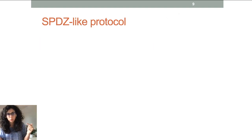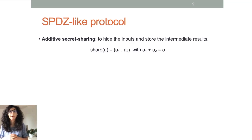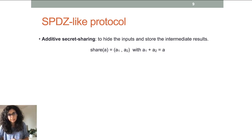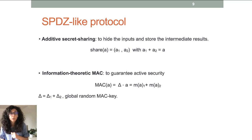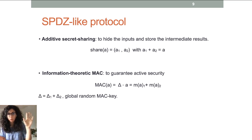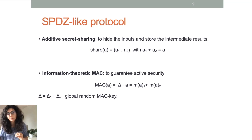I'll start by recalling how an SPDZ-like protocol looks. We have two tools. First, additive arithmetic secret sharing: any value a is represented as a pair (a1, a2) such that their sum equals a, with Alice knowing only a1 and Bob knowing only a2. Second, an information-theoretic message authentication code: there is a global key delta, constant for the entire protocol, and the MAC of a value is just the product of the key and the value, also secret shared.